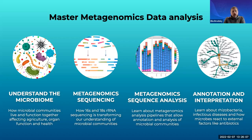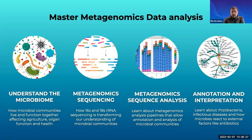The second thing we need to understand is how can we generate digital data that represents this community. Here we need to speak about different types of metagenomic sequencing, including amplicon sequencing, whole metagenomic sequencing, metatranscriptomic, and others — so how can we actually study the genomic material in a given sample from a microbiota and understand how many different microorganisms we see.